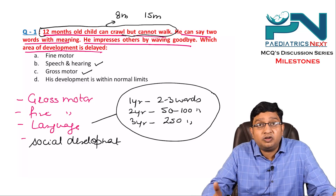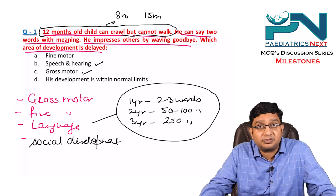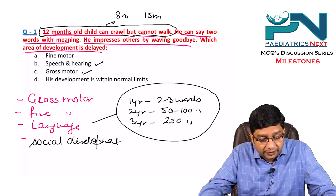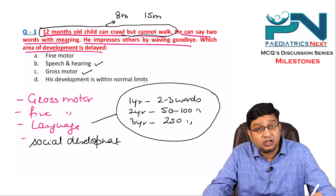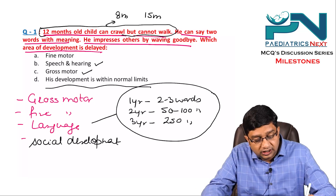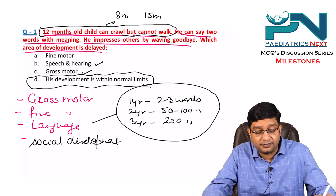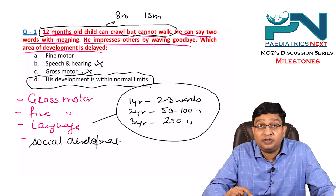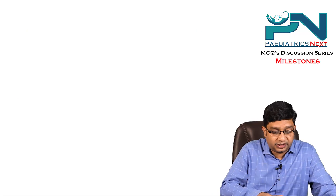Waving goodbye falls under social development and comes at nine months, so a 12-month-old child waving goodbye is well within normal. There is nothing to suggest fine motor delay either. Using the method of exclusion, the right answer is that this child's development is within normal limits.